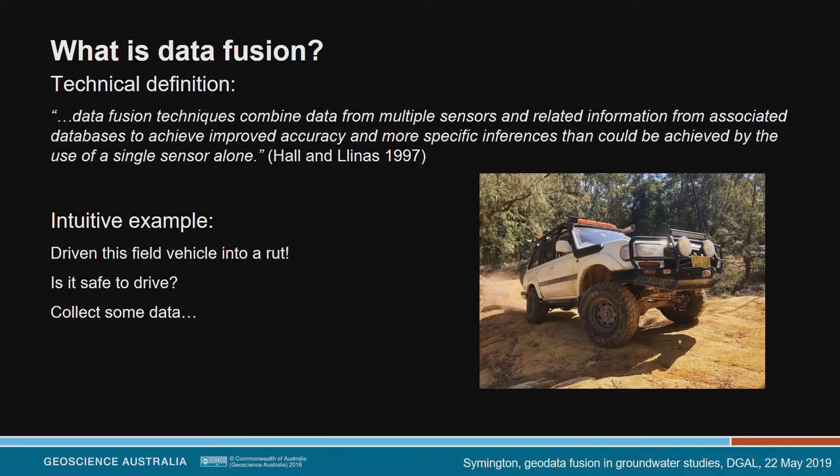I'm now going to give a bit of an explanation of my understanding of data fusion, because I know it's a term that has different meanings in different fields. The best technical definition I could find is: data fusion techniques combine data from multiple sensors and related information from associated databases to achieve improved accuracy and more specific inferences than could be achieved by the use of a single sensor alone. Essentially, if you have more data sets imaging a particular part of the system, you're going to get a less uncertain picture of it.